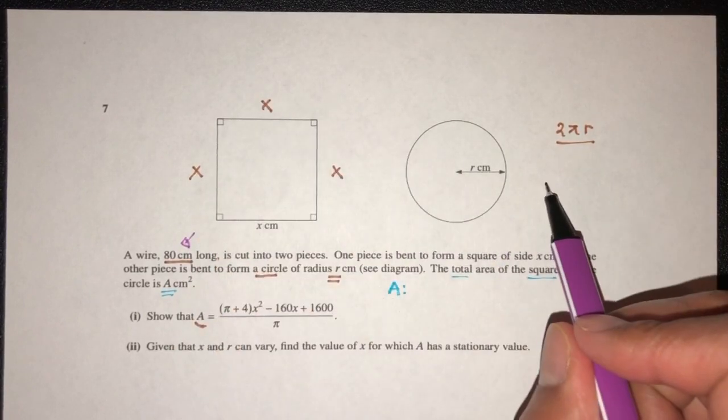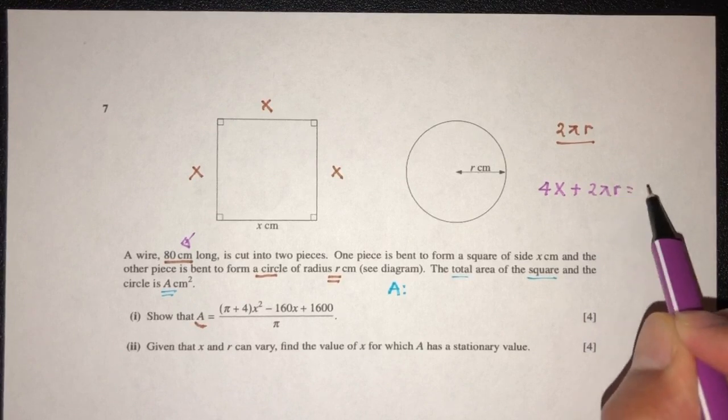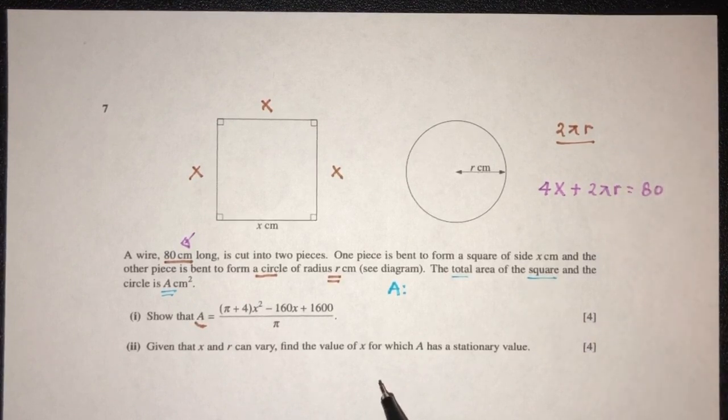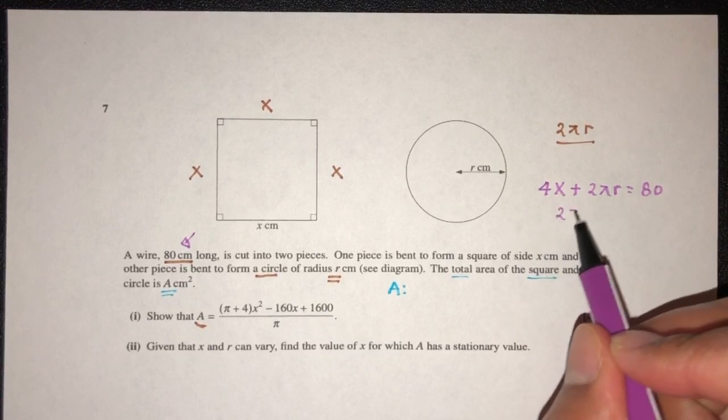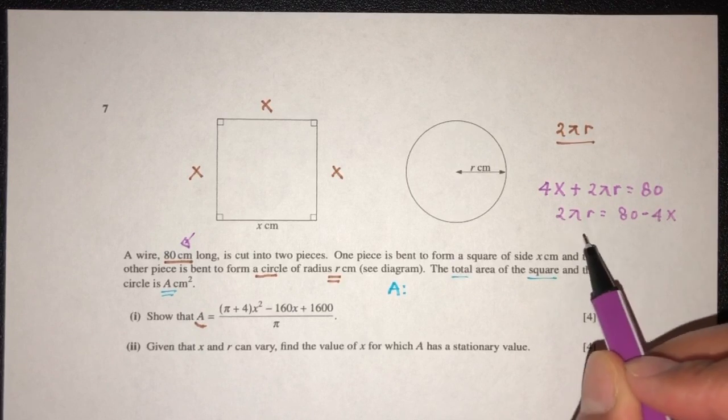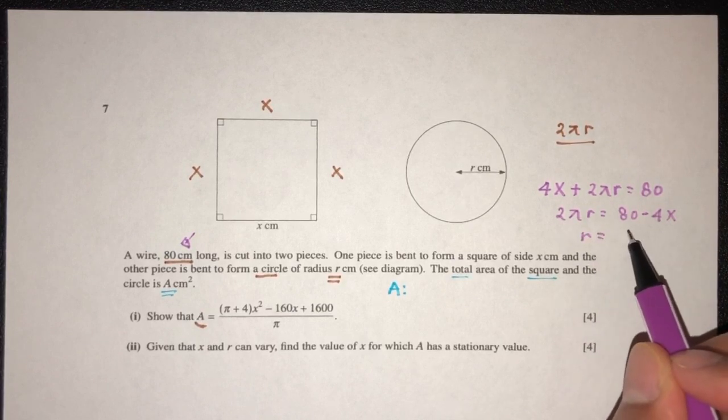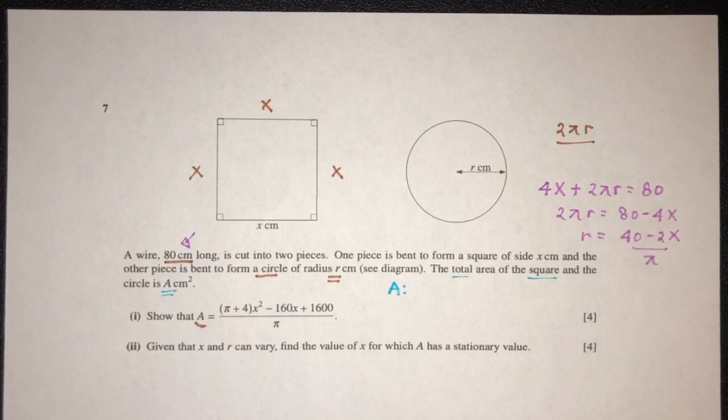So what is the length of this? That will be x, x, x, and x. That will be 4x plus 2πr have to be 80. From this, I can find the value of r. So 2πr, 80 minus 4x. R will be the value of 40 minus 2x over π. That is the value of r.